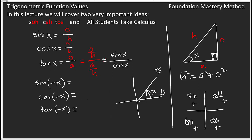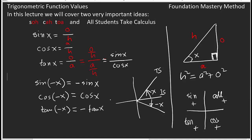Suppose we take an angle X with the terminal side in the first quadrant and the initial side along the positive x-axis. When we consider negative X, the angle goes into the fourth quadrant. Sine of negative X: since sine is negative in the fourth quadrant, this equals negative sine X. Cosine of negative X: since cosine is positive in the fourth quadrant, this equals cosine X. Tangent of negative X is negative tangent X.